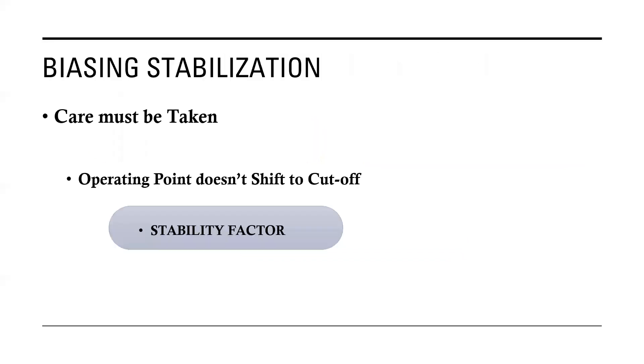As a result, in biasing stabilization, care must be taken such that the operating point does not shift to cutoff. While designing a biasing circuit, the case should be such that the operating point shall not shift to the undesirable zone or region. In general words we call them as cutoff or saturation regions. The most important thing to discuss here is the stability factor.